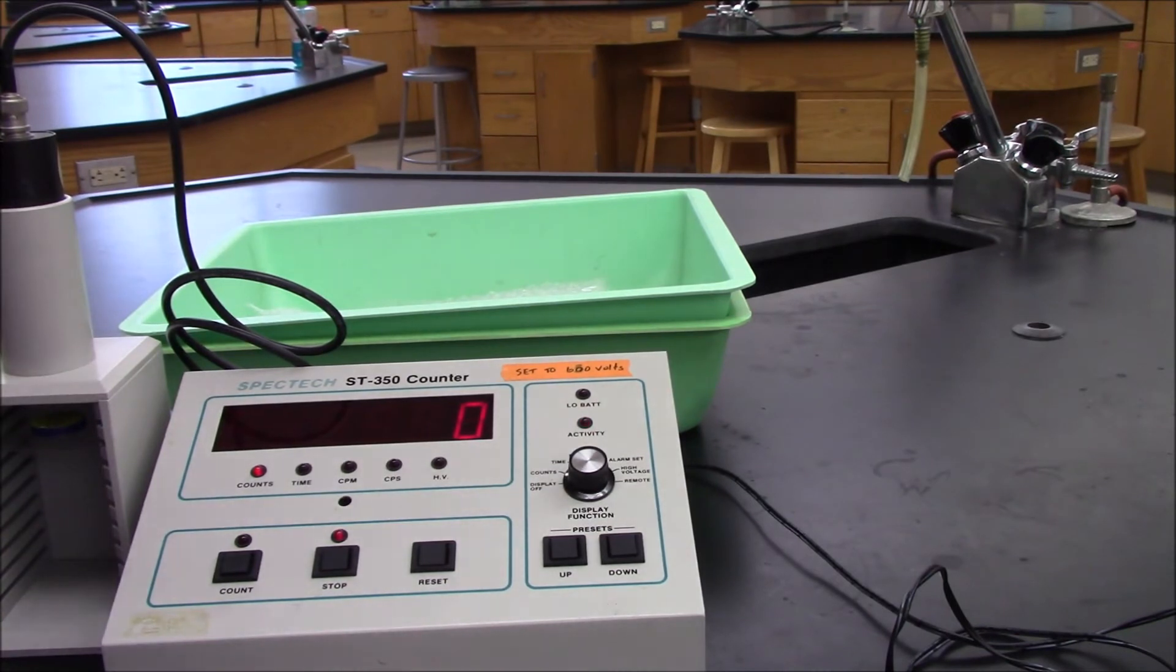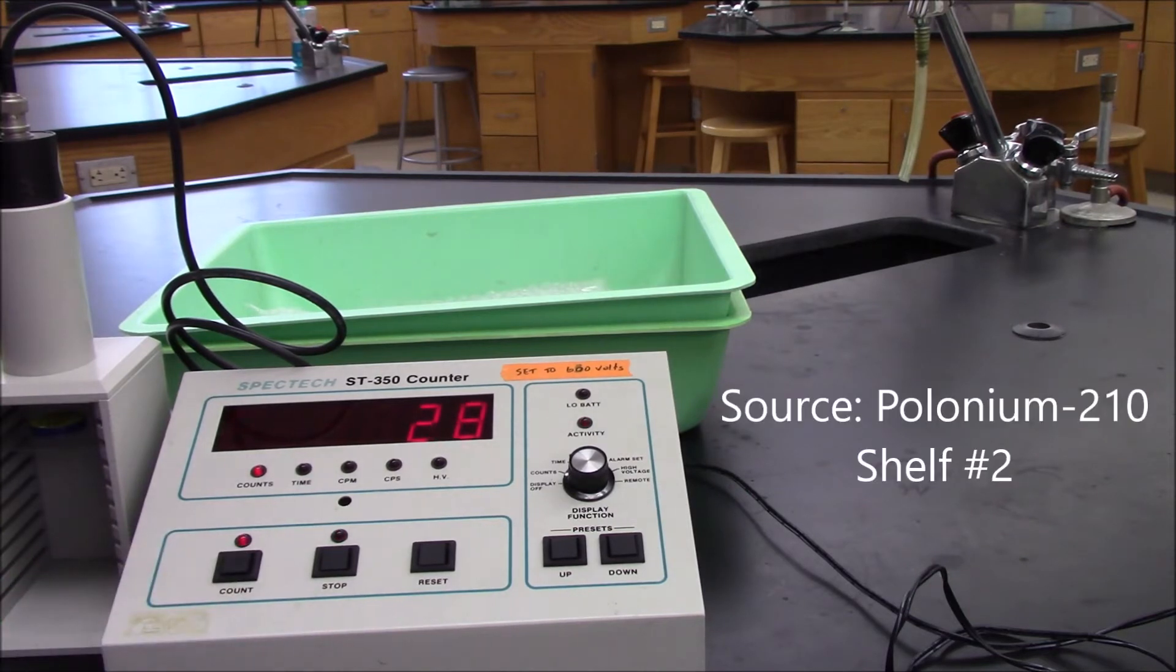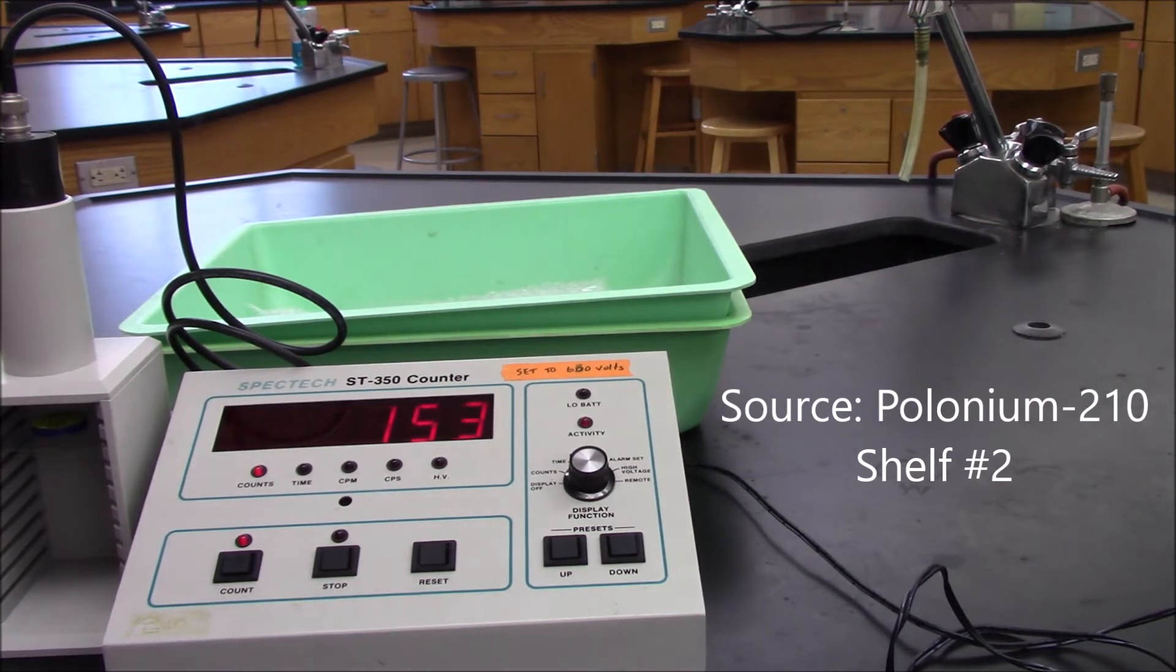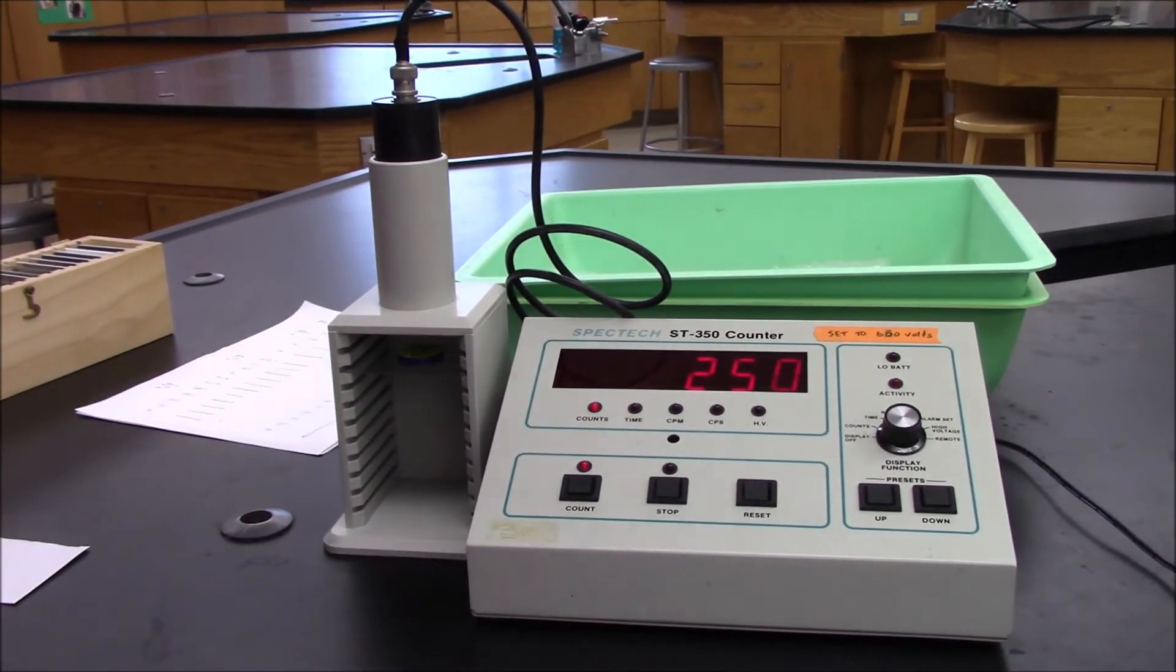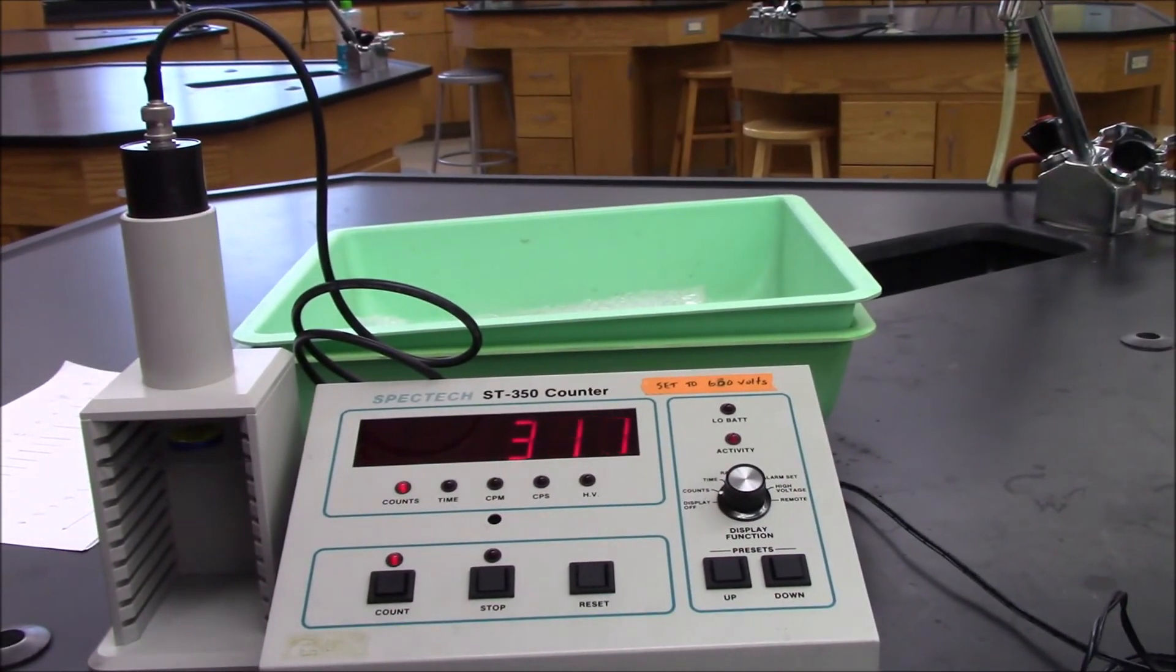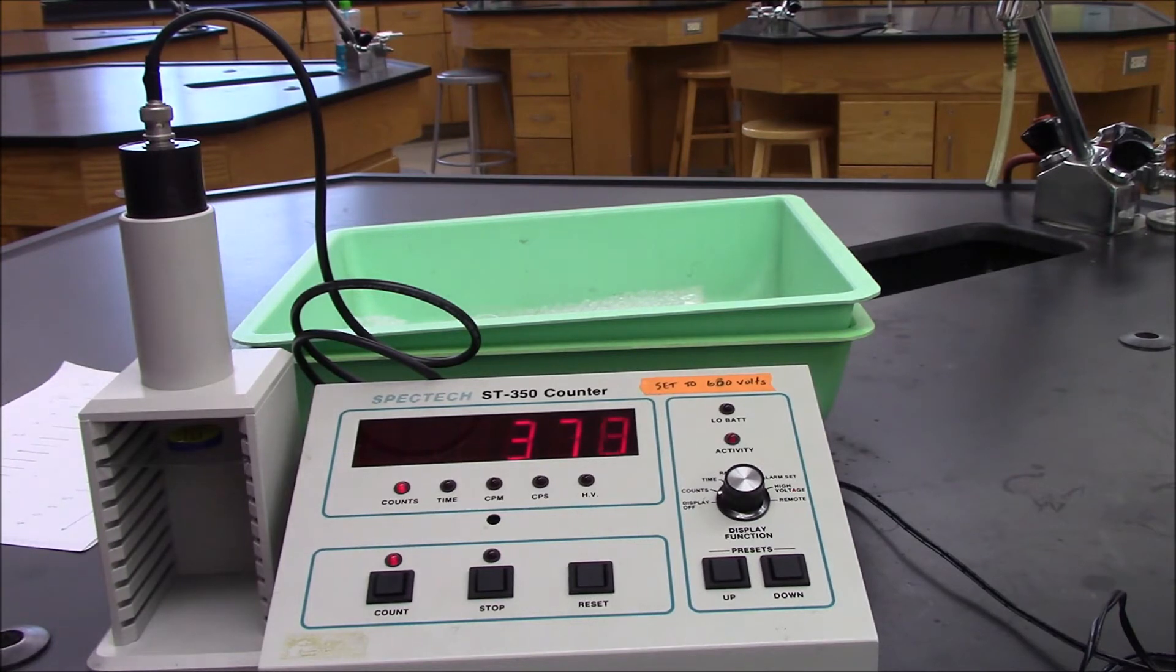So now we're going to do the alpha source. This is a sample of polonium-210. I've put the sample on shelf number two. So if you look here, the sample is on the second shelf, and it's going to stay on the second shelf for every trial. That's just something that we'll make consistent throughout. So you can see we're getting quite a few counts here. Remember, this is an alpha emitter. So this is emitting a helium nucleus.